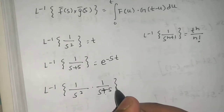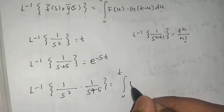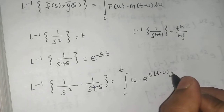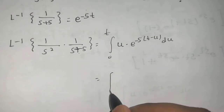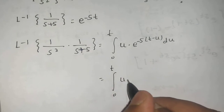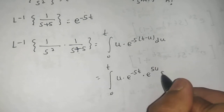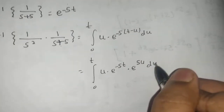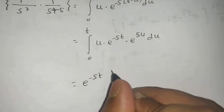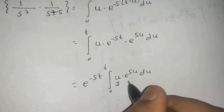Now if we find the Laplace inverse of the product 1 upon s squared times 1 upon (s+5), by the convolution theorem we get the integral from 0 to t of u times e^(-5(t-u)) du. This gives us e^(-5t) times the integral from 0 to t of u times e^(5u) du, since e^(-5t) is not part of the integration and can be taken out.